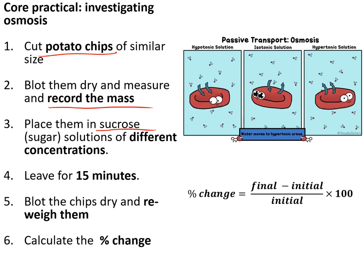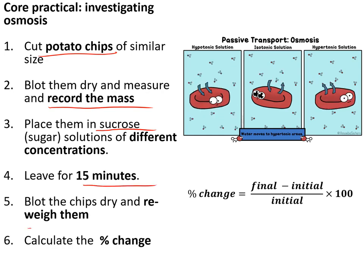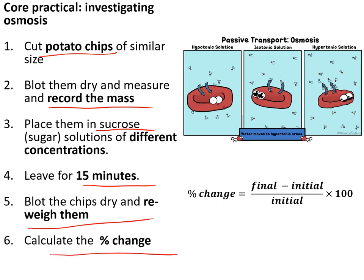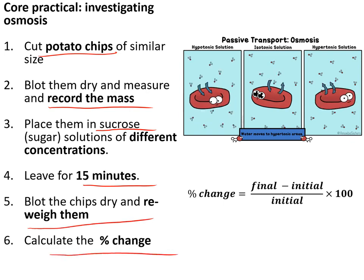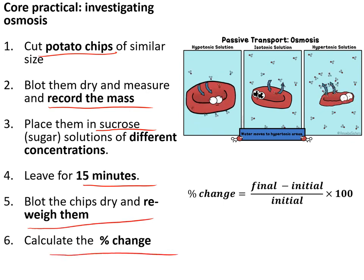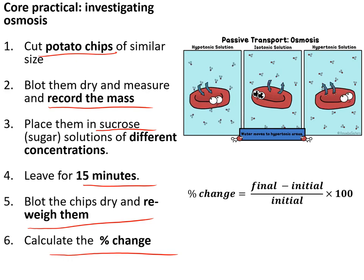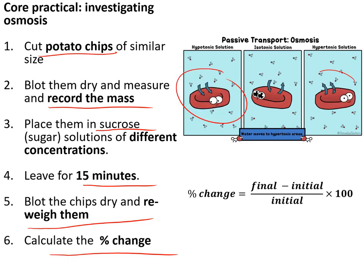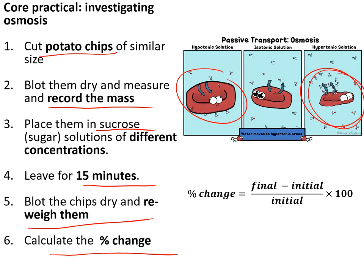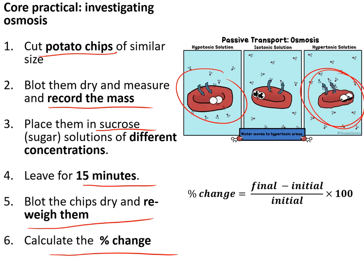The osmosis core practical involved taking potato chips of similar sizes, recording their mass, placing them in sucrose solutions of different concentrations, leaving them for 15 minutes, then re-weighing and calculating percentage change. The ones in the lowest concentrations of sugar increased in size because water entered by osmosis, and the ones in the highest concentration of sugar decreased because water left by osmosis.